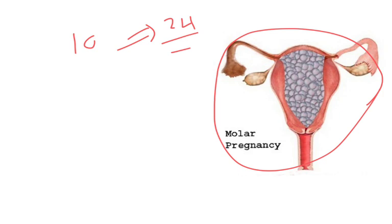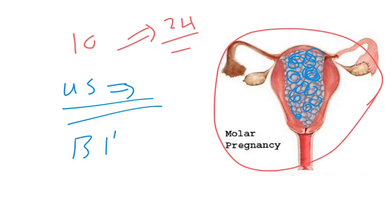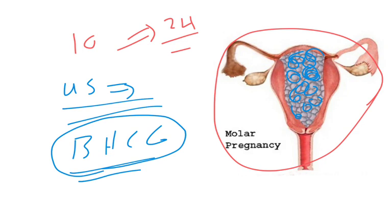First by ultrasound. You will do ultrasound which will clearly show you this grape-like appearance that will be found in the uterus. You also may do beta HCG, but it's not clearly differentiating molar pregnancy from other types like tubal pregnancy or anything that will elevate beta HCG level. So ultrasound is the diagnosis and the best first test.